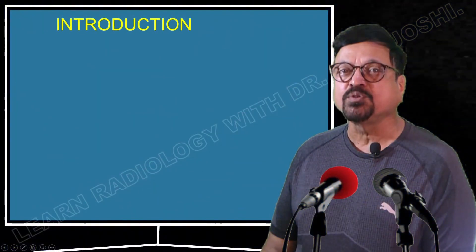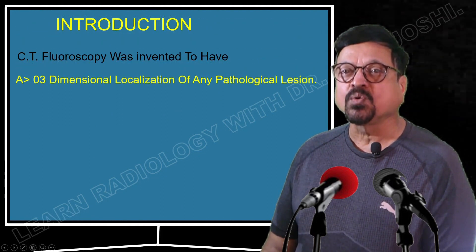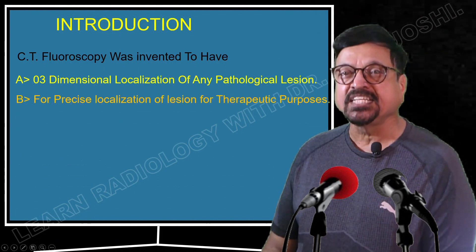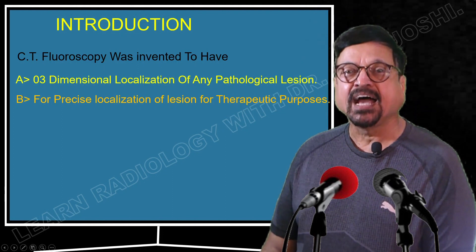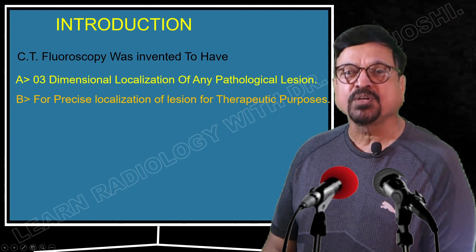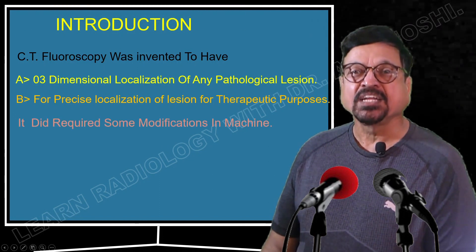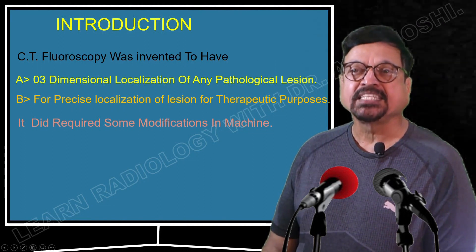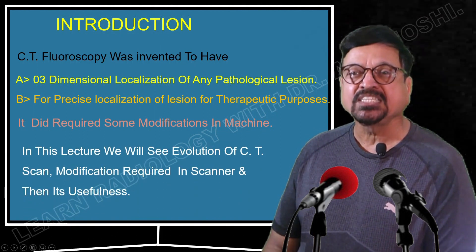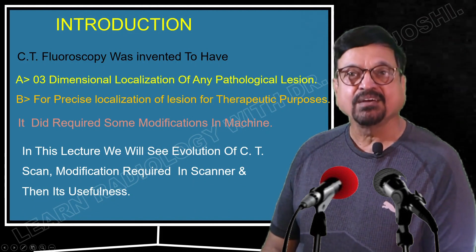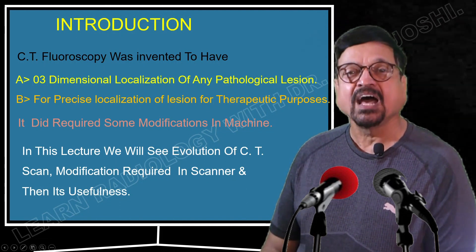With this brief introduction, let us get going to the topic. CT fluoroscopy was invented to have three-dimensional localization of any pathological lesion. Especially for small lesions, we need very precise localization so that with a needle we can target them either for diagnosis, histopathology, or treatment with medications. Precise localization is required for both therapeutic and diagnostic purposes, which required some modification in existing CT machines. In this lecture, we will see the evolution of CT scan and how machines were modified for this special technique.